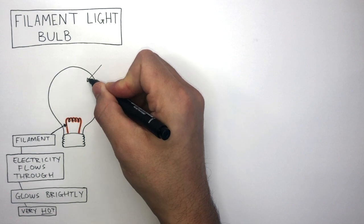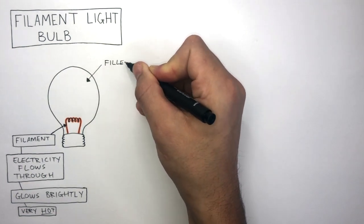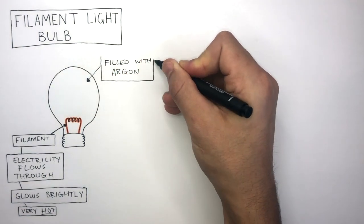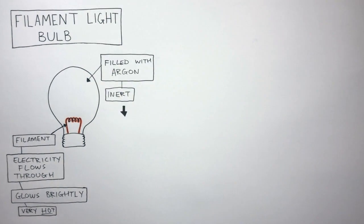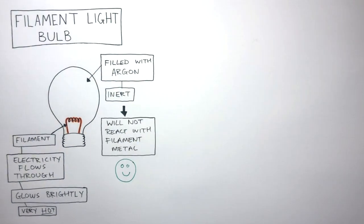Filament light bulbs work really well because they're filled with argon. And we know argon is inert, just like all noble gases. And because argon is inert, it will not react with the filament metal. This is a good thing, because when the filament metal is hot, it makes it more susceptible to reacting with a gas. And if this happens, the filament metal will lose its properties and stop being able to conduct electricity.